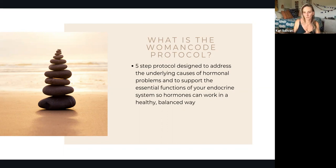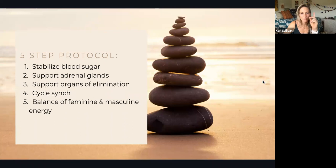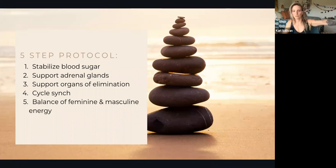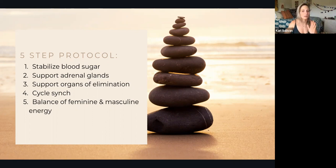The five-step protocol: Step one is stabilizing your blood sugar — super important whether you are bleeding or not, whether you're a child, in menopause, or currently bleeding. If we could all learn how to stabilize our blood sugar, the world would be a better place. People wouldn't be getting hangry, we'd have level heads more of the time, we wouldn't binge — things would be so much better.